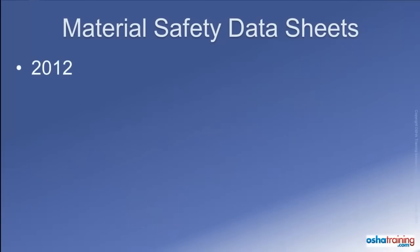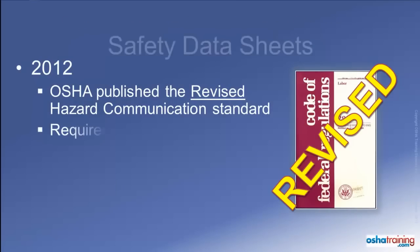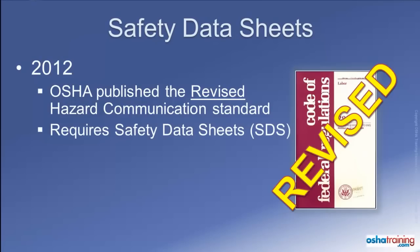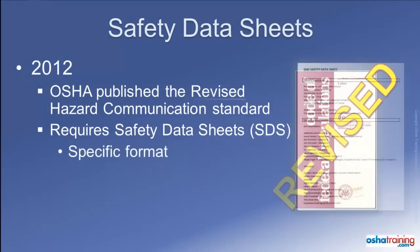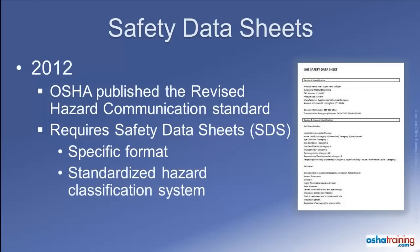So, in 2012, OSHA revised their Hazard Communications Standard and did away with the requirements for material safety data sheets. Now, manufacturers and distributors of hazardous chemicals and products will have to start providing a new informational document called a Safety Data Sheet, or SDS. While the information contained on new safety data sheets is very similar to that appearing on the old MSDSs, the information will now have to follow a specific format and order. There is also a standardized hazard classification system that must be utilized on all SDSs, and the revised HazCom standard now requires that employers train their employees on how to read and understand the new GHS Safety Data Sheet format.